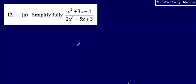This is question 12 from a series of videos looking at the Edexcel practice papers. Here we're asked to simplify fully x squared plus 3x minus 4 over 2x squared minus 5x plus 3.